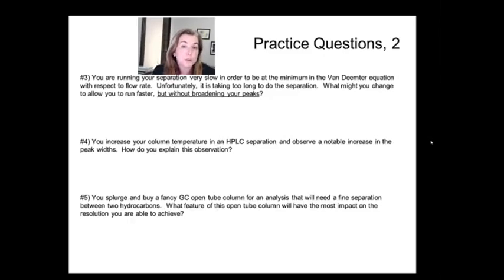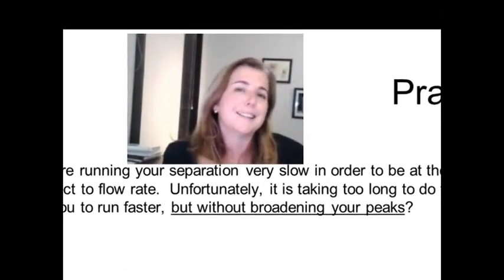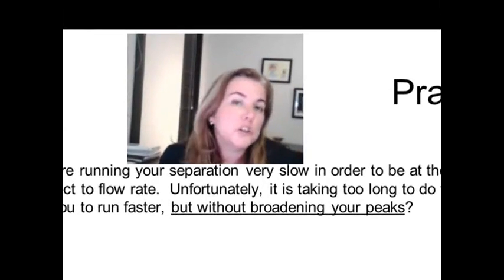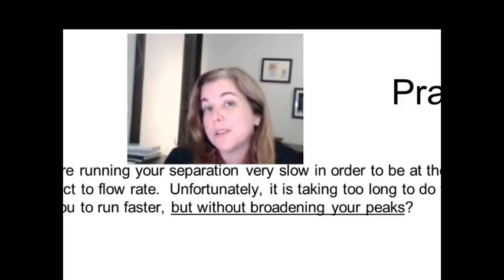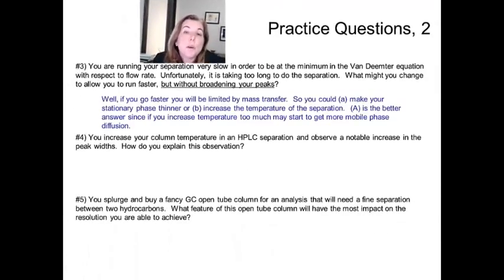So if you're running your separation very slow in order to be at the minimum of that curve. So you can't go fast because you run into mass transfer so you go slower and slower until it's taking like an hour to do your separation. What do you do? What could you change that would let you run faster but not broaden your peaks? Well what you want to do probably is make your stationary phase thinner. What that's going to allow you to do is go a little bit faster without paying the price of the mass transfer. I think temperature could be a reasonable answer too but without knowing really what the dominant issues are it's a little bit of a tricky answer to give.